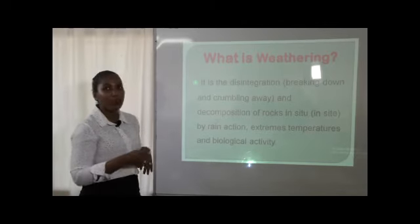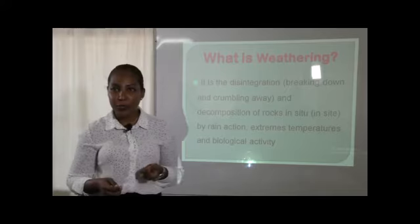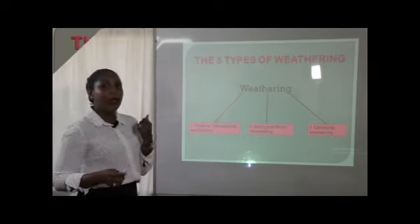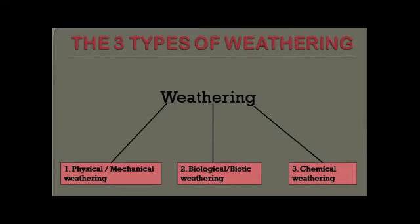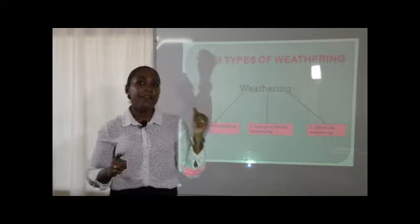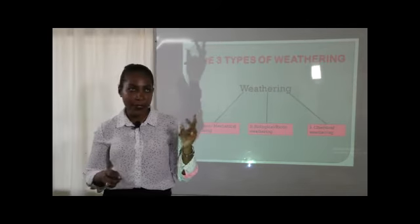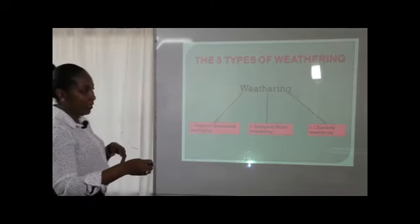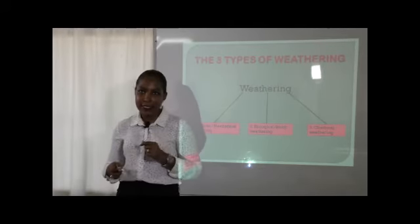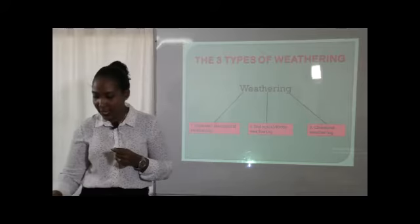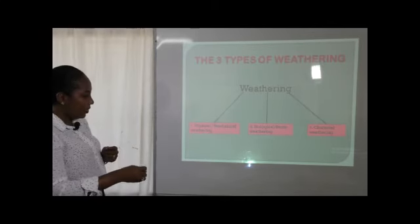Now, what are the main types of weathering? We have three main types of weathering: physical weathering, biological weathering, and chemical weathering. For each of the main types of weathering, I'm going to explain the different processes and the resultant landforms — the features which are formed as a result of these processes. To start off with, we'll start with physical weathering.